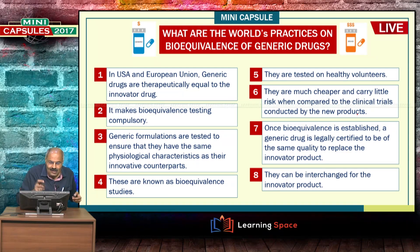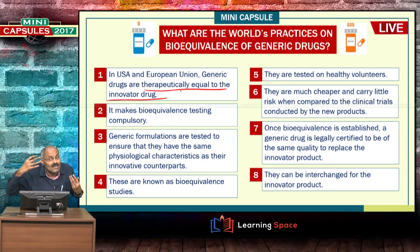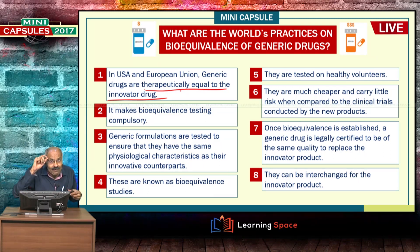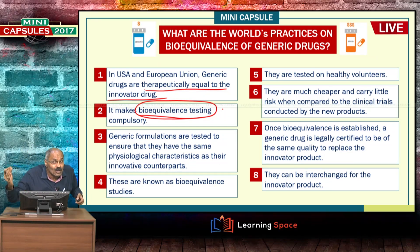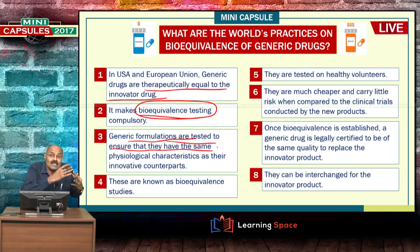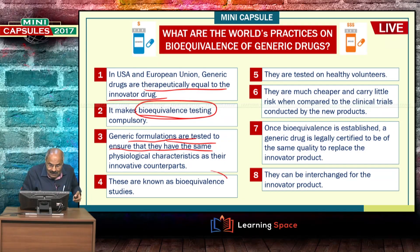If you look at the United States of America and the European Union, generic drugs are therapeutically equal to the innovator drug. In Western countries, bioequivalence testing — which indicates that a drug is equivalent in therapeutic use to the original innovator drug — is compulsory. Generic formulations are tested to ensure that they have the same physiological characteristics as their innovative counterpart, and these are known as bioequivalence studies.